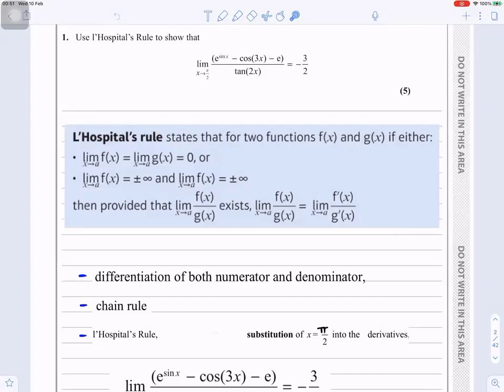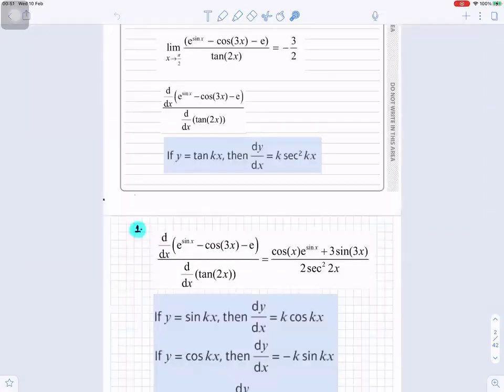We want to differentiate the numerator with respect to x and the denominator with respect to x. If y = tan(kx), then dy/dx = k sec²(kx). If y = sin(kx), then dy/dx = k cos(kx). If y = cos(kx), then dy/dx = -k sin(kx). Those are some of the rules we're going to use for the differentiation.